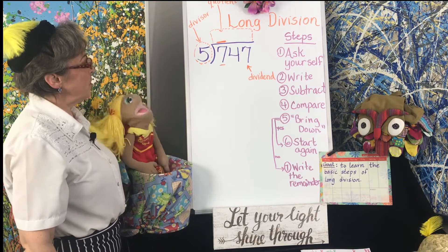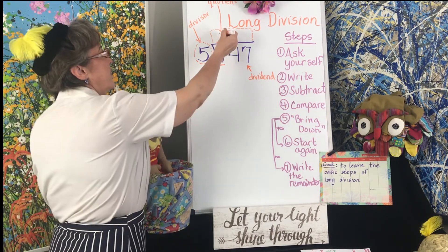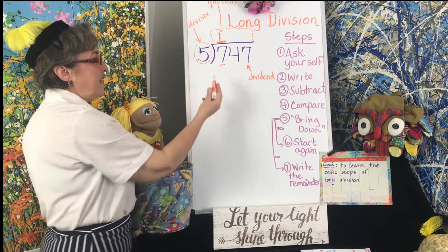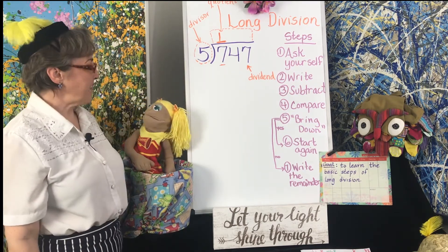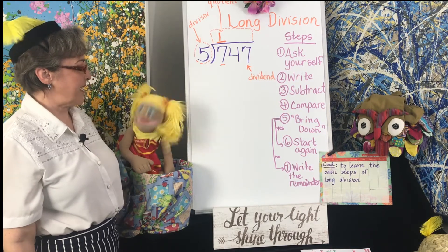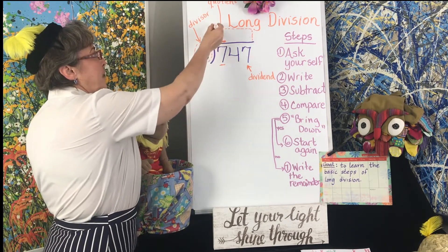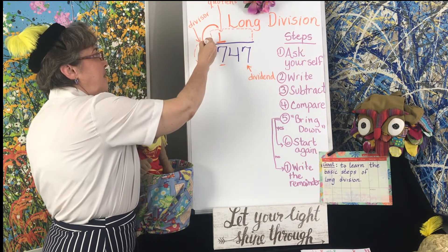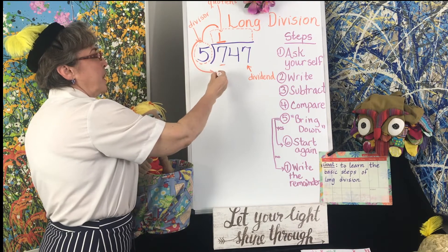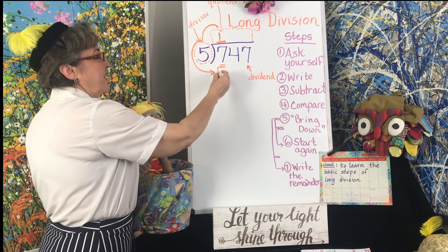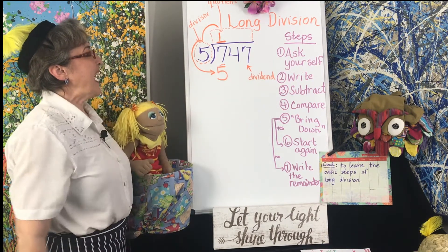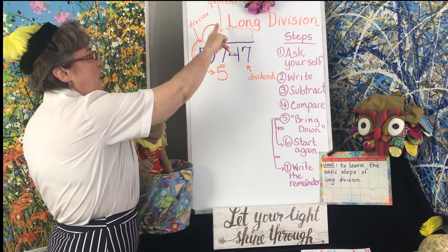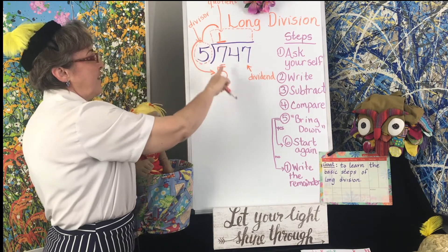Well, if I put a 1 there — let's try 1. 1 times 5 is 5. Is 5 less than or equal to 7? Yes. So let's try it. 1, and we're going to put a rainbow — this is why it's called the rainbow. 1 times 5, and we're going to put the number right here, is 5. That's step 1. And the second step is write it. So we're going to write the 1. 1 times 5 is 5.